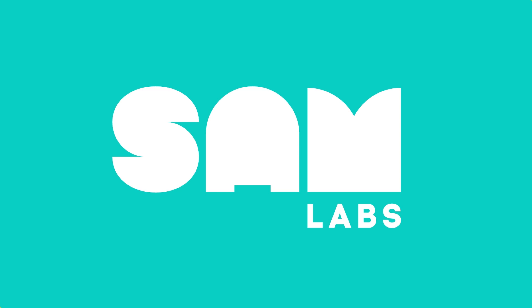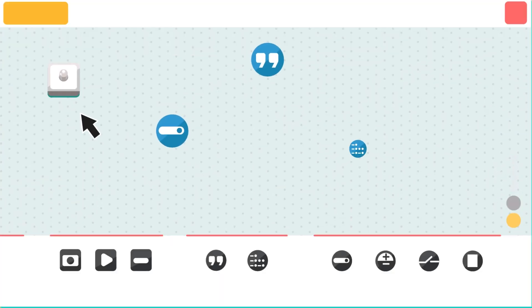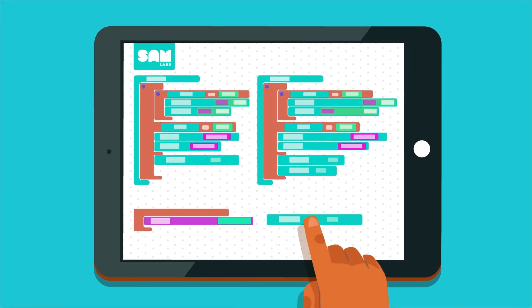Smart Coding Kits by SAM Labs enable student progression for different skill levels, so you can start with visual flow-based coding, then progress to block-based coding with SAM Blockly.